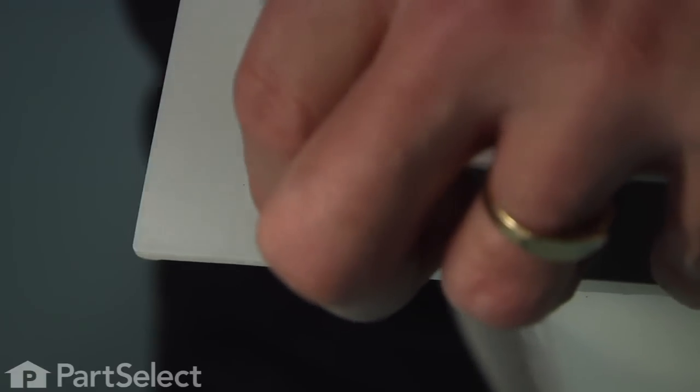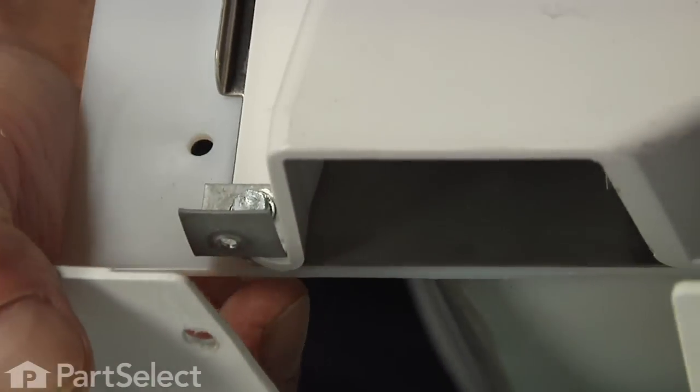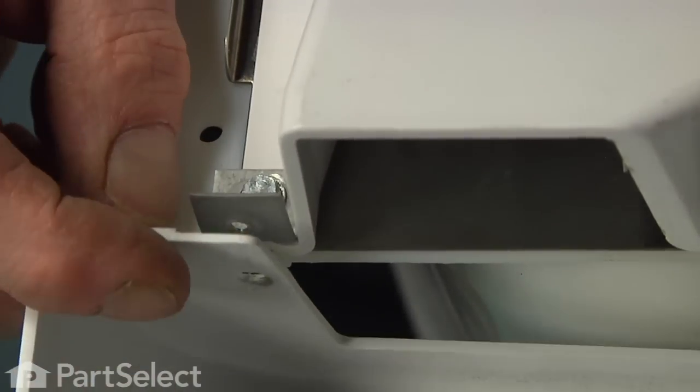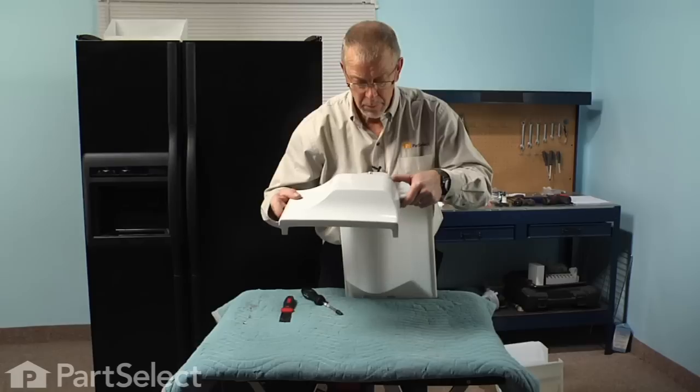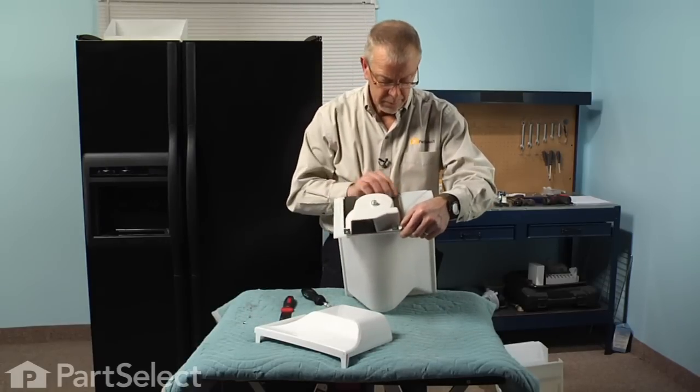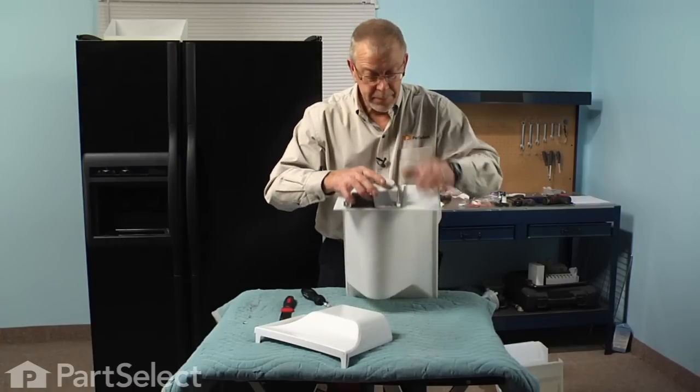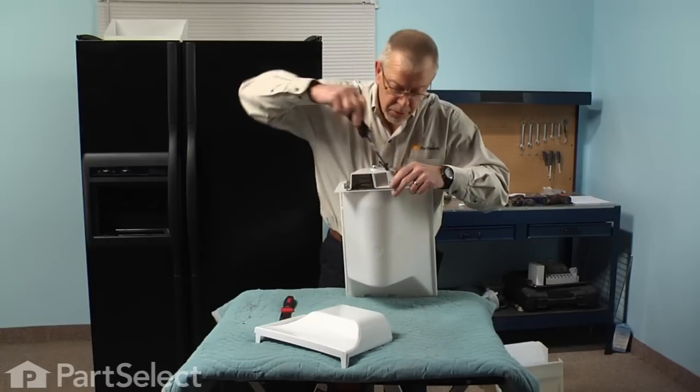Before we tighten these up, we'll need to make sure the adjustment of those L-brackets lines up with the two holes in the bottom of the face cover. Make sure that the tabs are still lined up across the top, and tighten the screws.